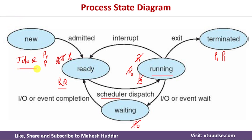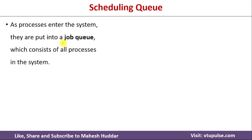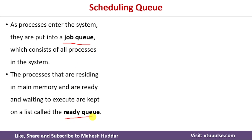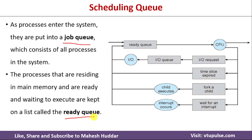These are the states a process goes through in its lifetime. Initially it is put into the job queue. Whenever there is space in primary memory, it is placed in the ready queue. If the CPU is free, the process is allocated CPU time and starts running. If it makes an IO request, it goes to the waiting state, and after the IO event, it returns to the ready state. If execution completes successfully, it goes to the terminated state.